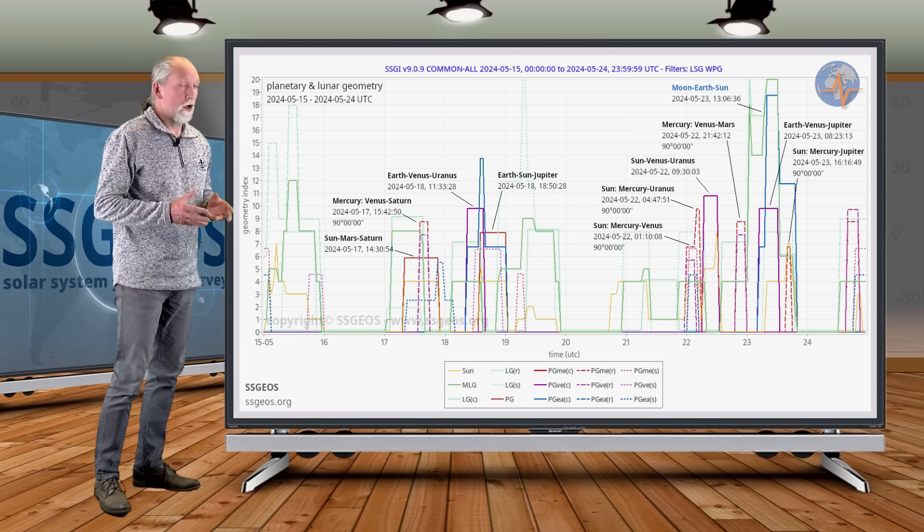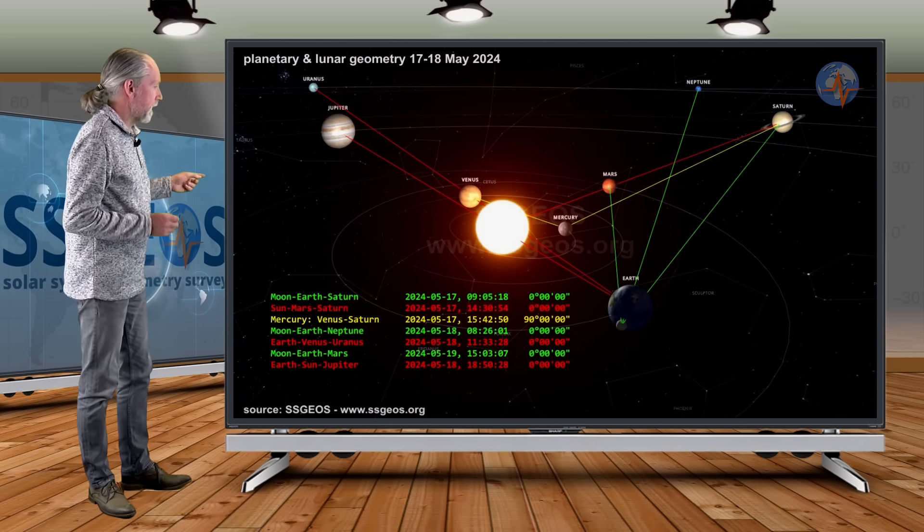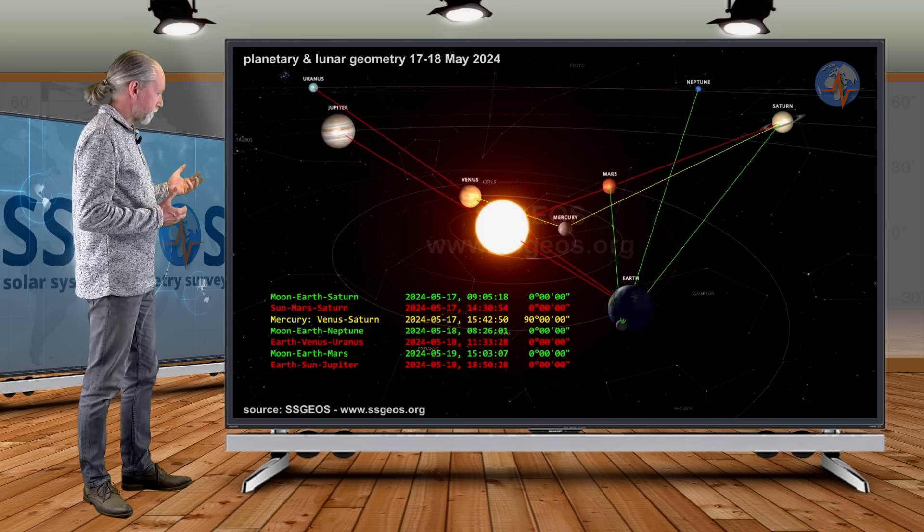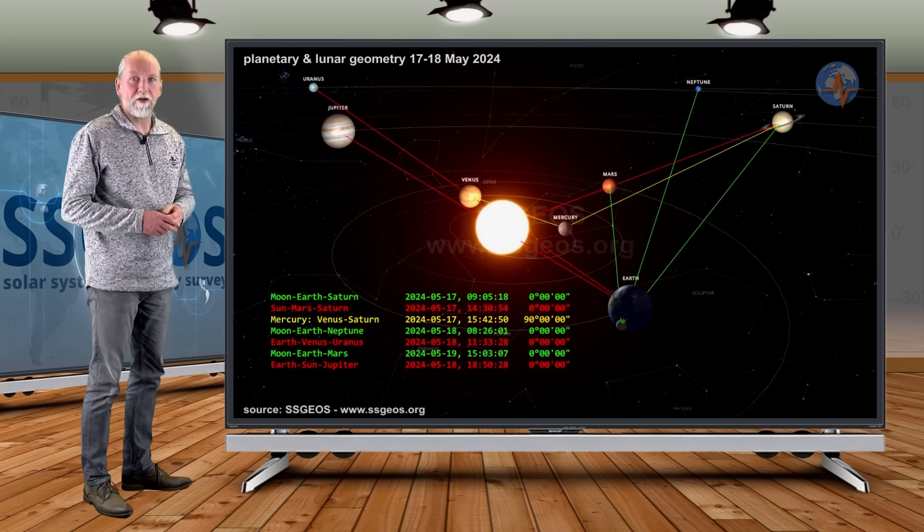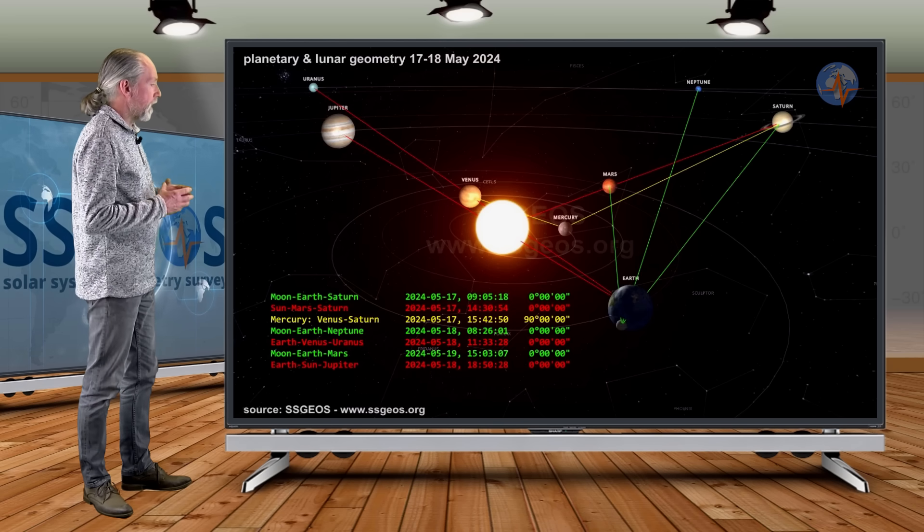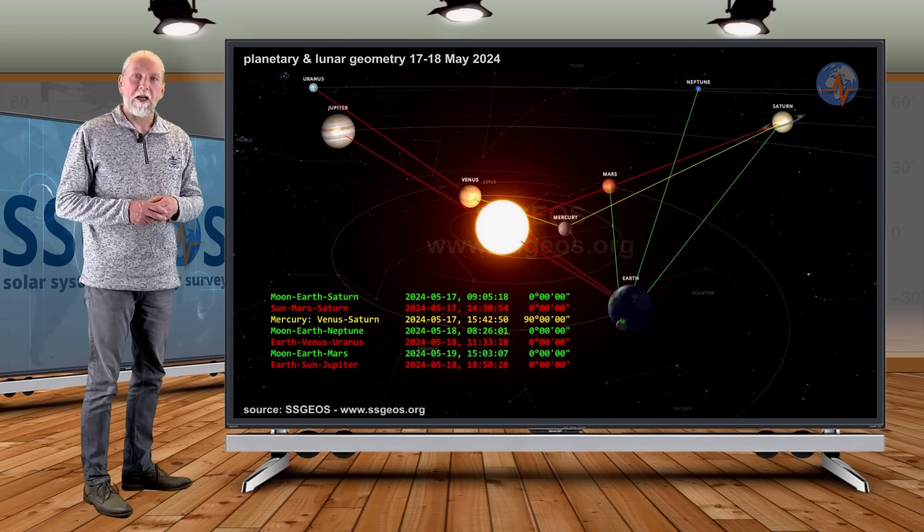Now let's have a look at the geometry in the solar system, how that actually looks like. Of course we also have some lunar geometry converging there. Here you see the planetary conjunctions in red. These are the red lines. And then you see the right angle in yellow and the lunar conjunctions in green.